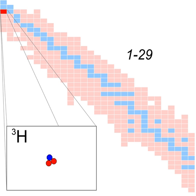Tritium is also produced in heavy-water moderated reactors whenever a deuterium nucleus captures a neutron. This reaction has a quite small absorption cross-section, making heavy water a good neutron moderator, and relatively little tritium is produced. Even so, cleaning tritium from the moderator may be desirable after several years to reduce the risk of its escaping to the environment.